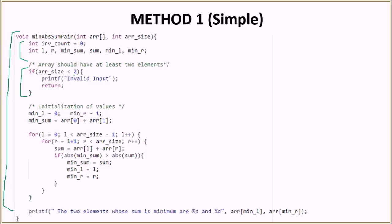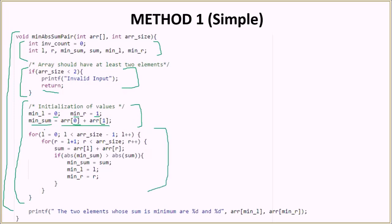If the array size is less than 2, then we cannot find a pair, so we print that the input is invalid and return. If the input is valid, that is the array has two or more elements, then we execute the algorithm. We initialize minimum l equal to 0, minimum r equal to 1, and min sum equal to the sum of the first and second elements, that is the elements at index 0 and index 1. We do this because we need some initial value to compare against in the loops.